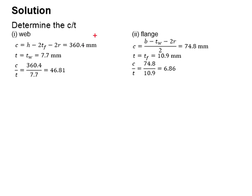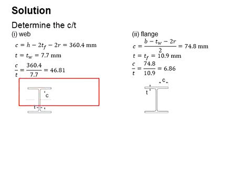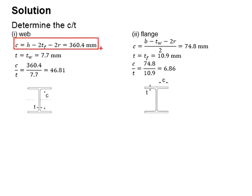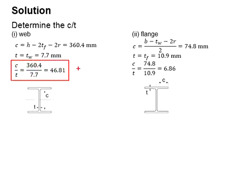For the condition of pure compression, we need to work out the c/t ratio. Based on the illustration given in table 5.2, the c for the web is obtained as 360.4 mm, and the thickness of the web is 7.7 mm. The c/t ratio equals 46.81.